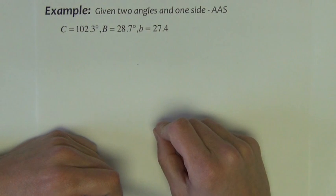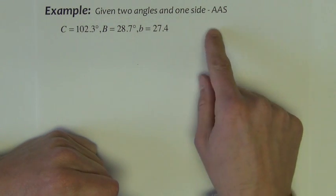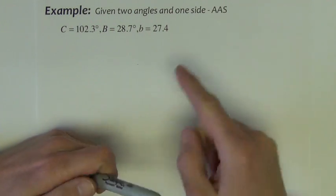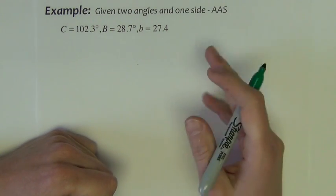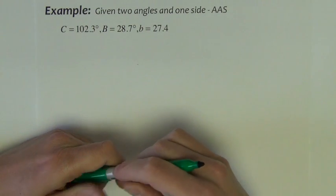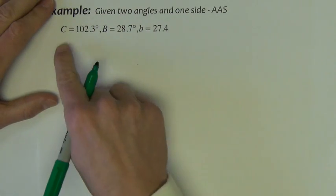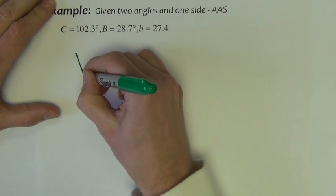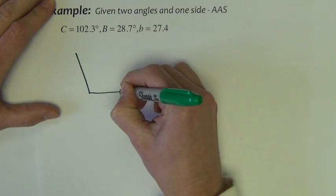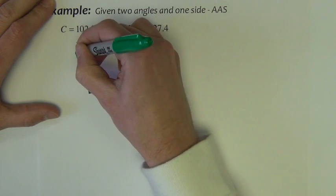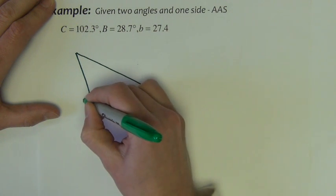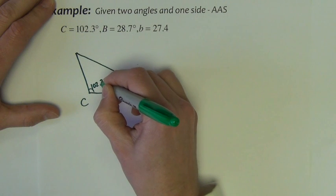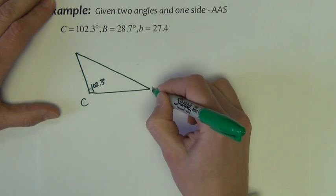One type of triangle that we can solve with the law of sines is one in which we're given an angle angle side setup. So let's draw this out. You can draw it to scale. You can not draw it to scale. It doesn't really matter. So this says angle C is 102.3 degrees. So you might try and draw an angle that is noticeably obtuse. So maybe you put this as angle C. It's 102.3.